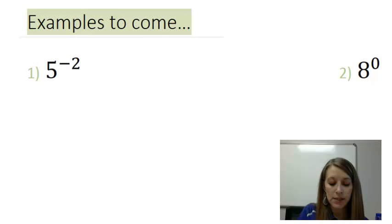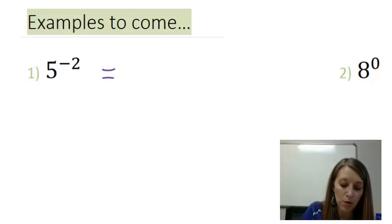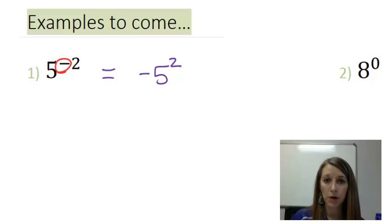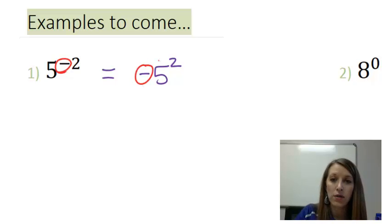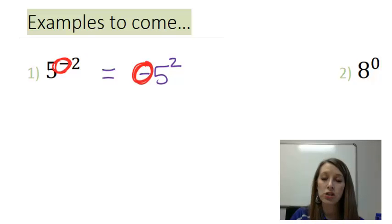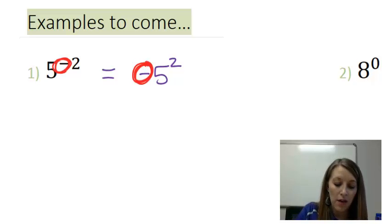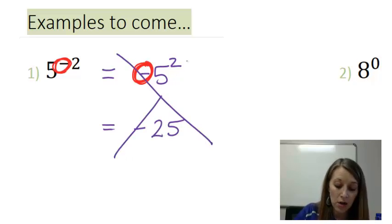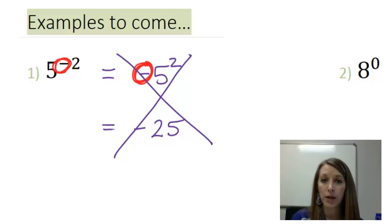In example one, the common mistake that I see is people moving this negative from the exponent and writing it out front as something like negative five to the second power. So I just want to tell you now that you cannot transpose a negative from your exponent to in front of the number. Those actually mean completely different things. So if you came up with the answer of this as negative 25, that is the incorrect answer and that is not the correct way to do that. I will show you the correct answer to this when I'm working through the properties.